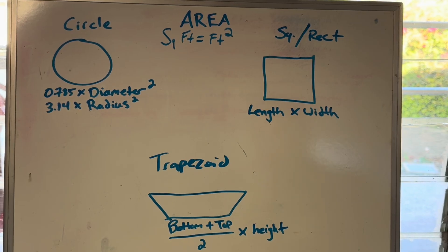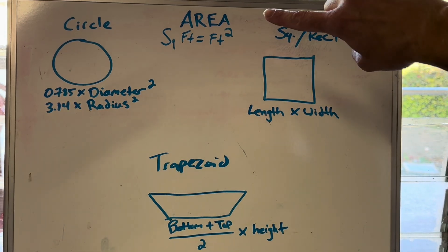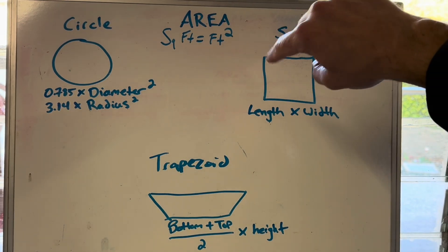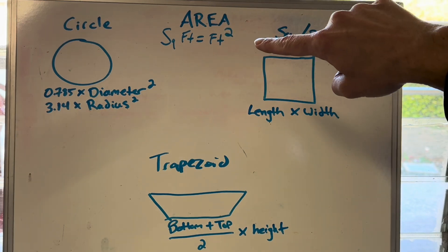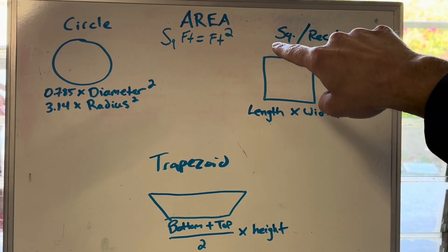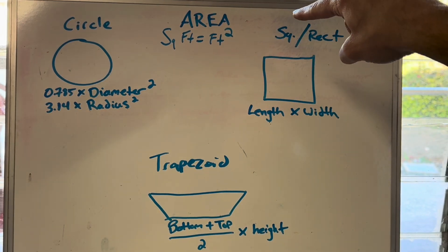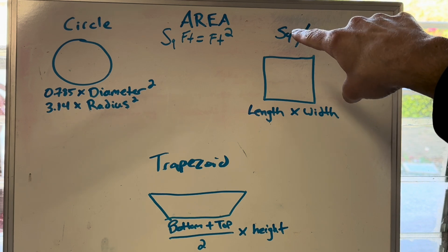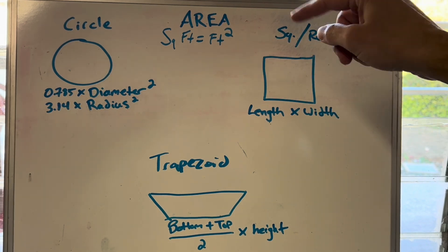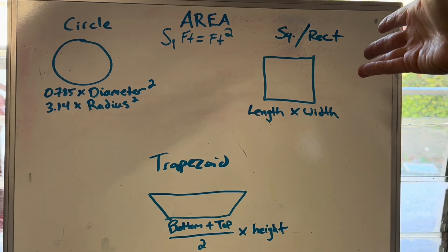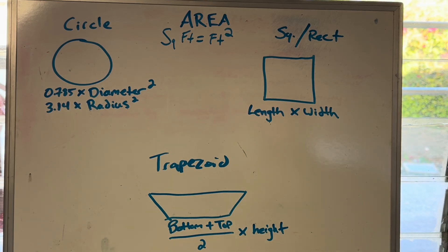For those of you who are unaware, area is expressed in square feet — SQFT. It might be written out on your exam like that, or written with 'FT' with a little two up top. That's called an exponent in math. In this case, the number two means squared — foot squared.